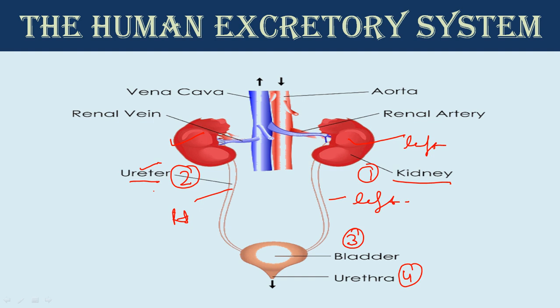Kidneys are the main part of the excretory system because the kidney maintains acid-base balance in the body, various electrolyte concentrations, and removal of toxins from the body. The regulation process of the body fluids and salt levels is called osmoregulation. Osmoregulation is the process in which body fluid as well as salt level is maintained.